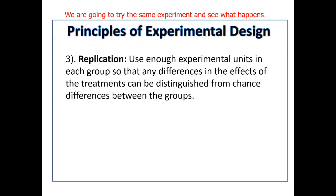Our third principle is replication. The way we define replication in this class is that if we were to repeat this process, we should get roughly the same results. We achieve this by having a large enough sample size. Ideally, we will repeat experiments over and over to test against results seen in other studies, and if we take a large enough sample size, the results will be approximately the same.